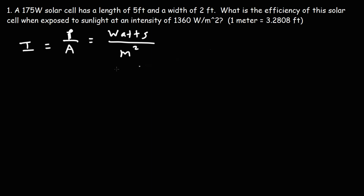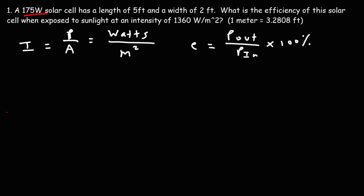In order to calculate the efficiency, we need to use this formula: efficiency is equal to the output power of the solar cell divided by the input power from the sun, times 100%. We already have the output power of the solar cell — it's 175 watts. What we need is the input power of the incident sunlight, and we need to use the intensity formula to get that.